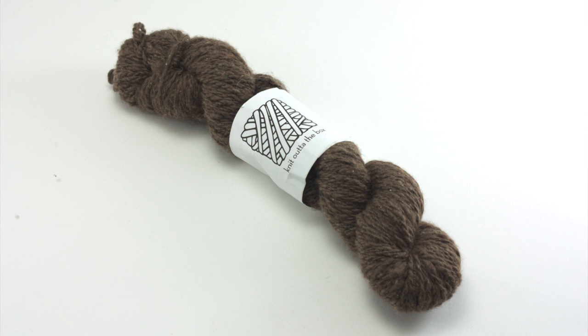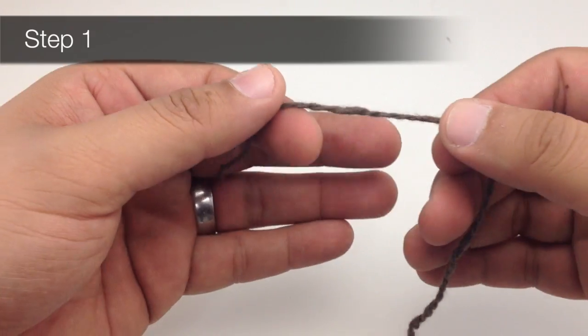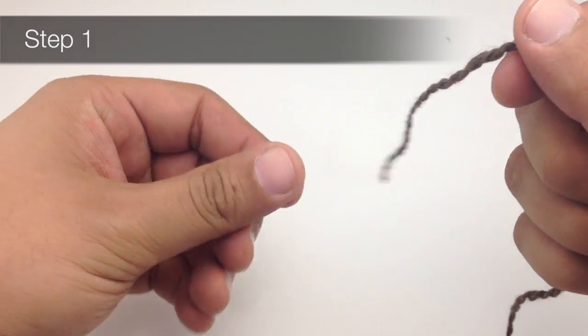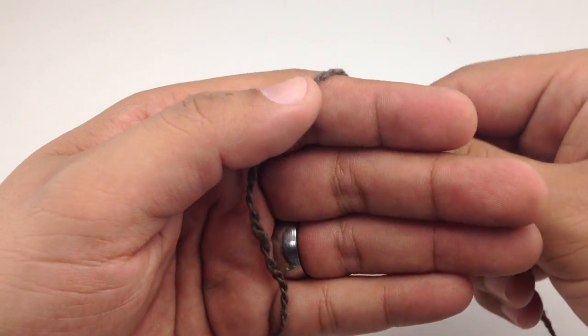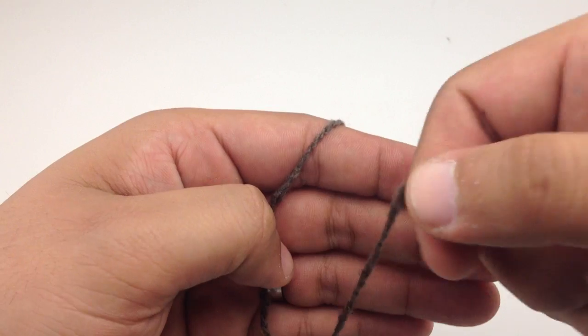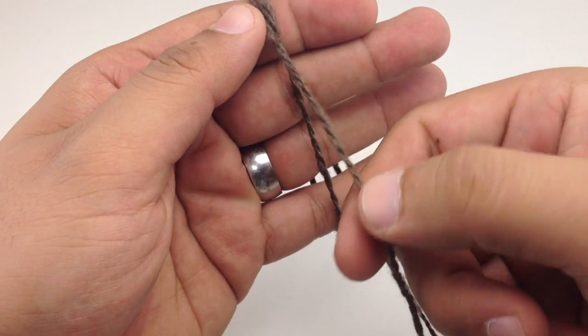Today we are using their 100% fair trade handspun Afghani cashmere in the color dark brown. Step one: we're going to take the tail of our yarn and lay it over the palm of our hand with the tail facing down, and we're going to wrap the yarn around our four fingers.